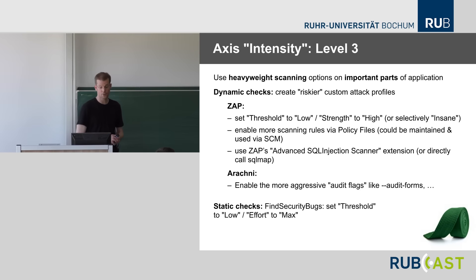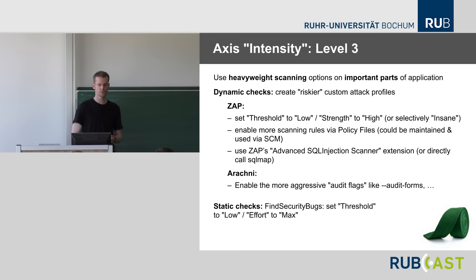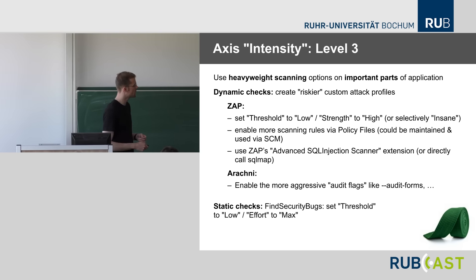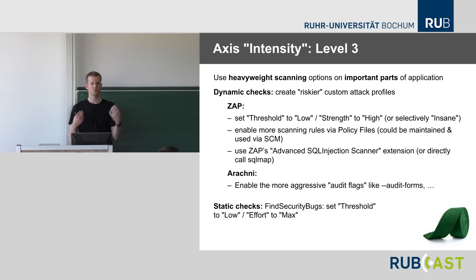Level 3, the green belt of intensity, is heavy-weight scanning during the build on at least important parts. This could mean using riskier profiles to increase threshold and strength levels — taking longer obviously — or using specialized scanners like SQLmap for SQL injection, or specialized extensions like ZAP's advanced SQL injection scanner which relates to SQLmap scans. The idea is to scan more aggressively and actively in the nightly build. For static code analysis tools this means increasing the threshold and effort the tool can spend on the scan.